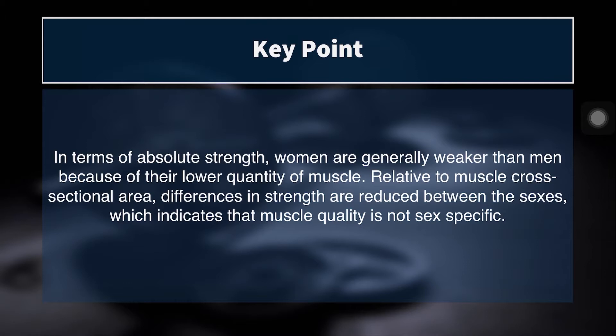The key point here is that in terms of absolute strength women are generally weaker than men because of their lower quantity of muscle. But relative to muscle cross-sectional area, differences in strength are reduced between the sexes, which indicates that muscle quality is not sex specific. It's not that women have some inherently weaker type of muscle — they simply have less of it, because their bodies support less muscle than males' bodies do.